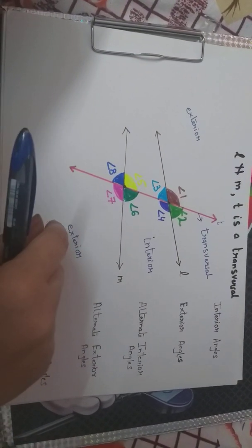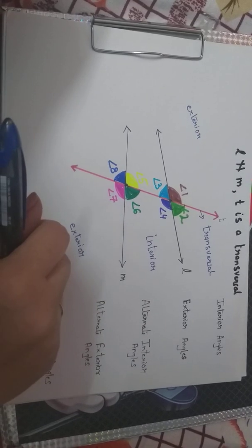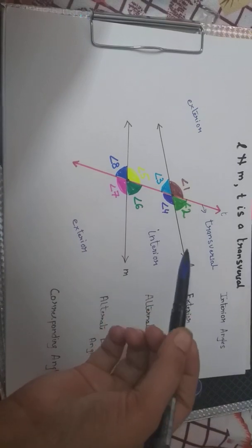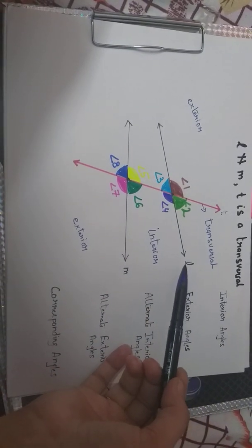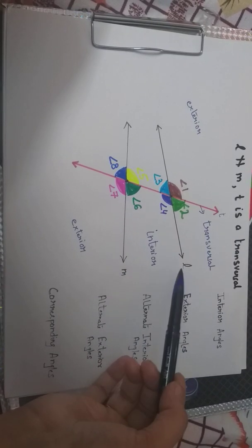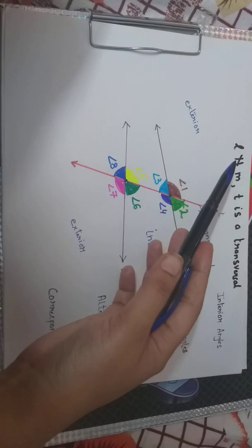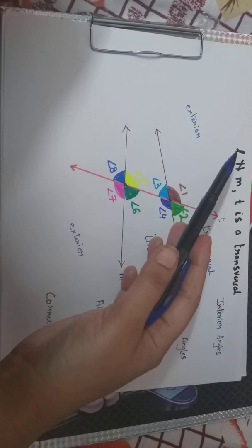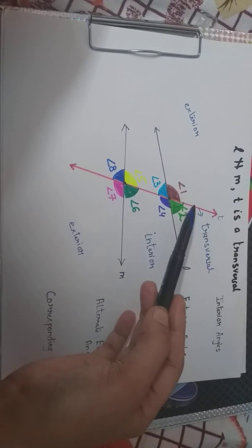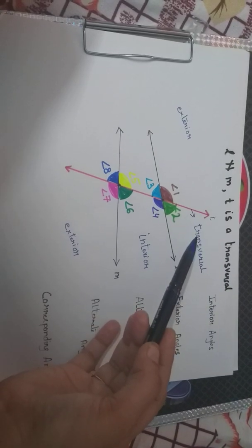Good morning children. Today we are learning about transversal angles. Now look at the figure — we have lines L and M. They both are not parallel to each other, and that's the symbol of not parallel. So L is not parallel to M, and this red colored intersecting line is called a transversal.